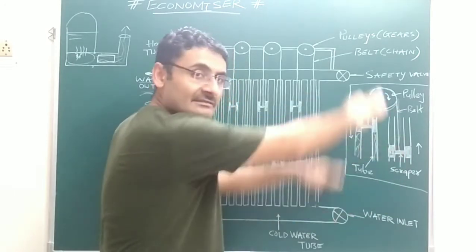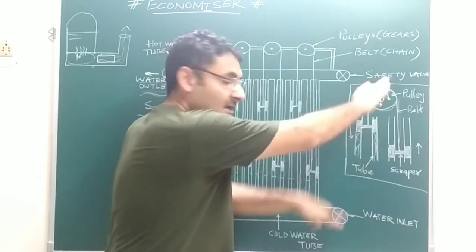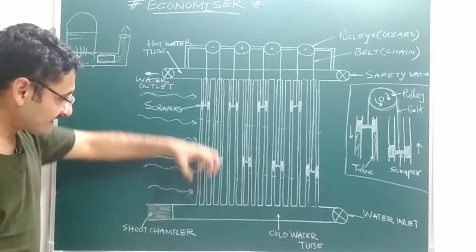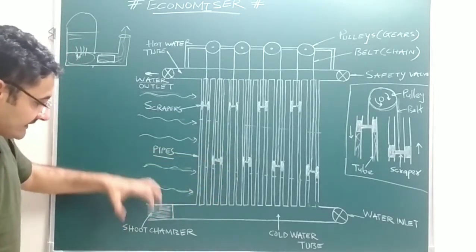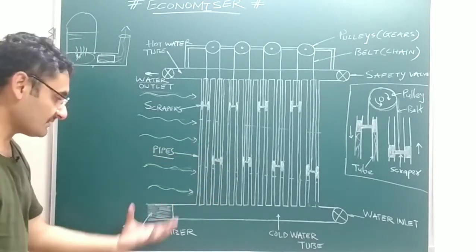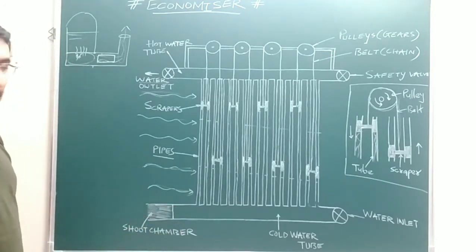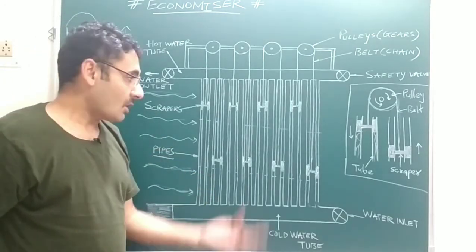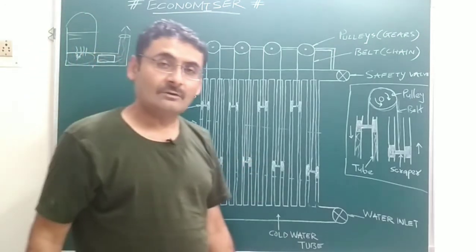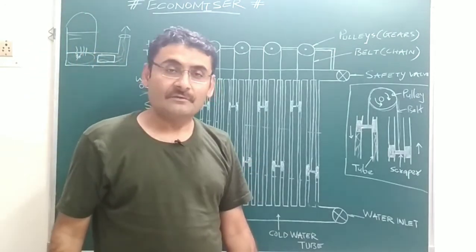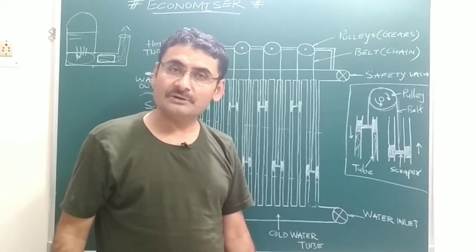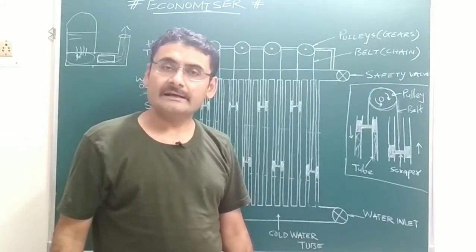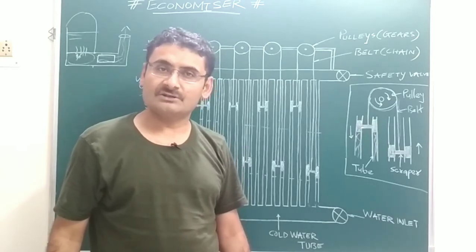Also, when water is heated inside the tube, the scrapers move continuously and remove the scale or impurities present in the water. The scale and impurities are collected inside the sludge chamber at the bottom. This was the working principle of the economizer. I would like to end this video; we will meet again in a new video with a new topic. Till then, read hard, work hard. Thank you very much.